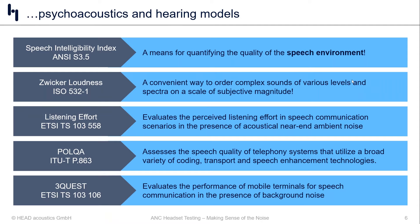The next metric is Zwicker Loudness, standardized in ISO 532-1. Zwicker Loudness is a convenient way to order complex sounds of various levels and spectra on a scale of subjective magnitude. It allows us, at least in the frequency domain, to apply the correct weighting functions and masking effects of the human hearing system, so we can speak more meaningfully about whether the impacts of our ANC systems — actively or passively — are meaningful from a human hearing perspective.